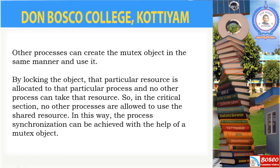All processes that have to enter into the critical section work in the same manner — they create a mutex object and use it whenever they want to use a resource. By locking the object, that particular resource is allocated to that particular process, and no other processes can take that resource. In the critical section, no other processes are allowed to use the shared resource at a time.